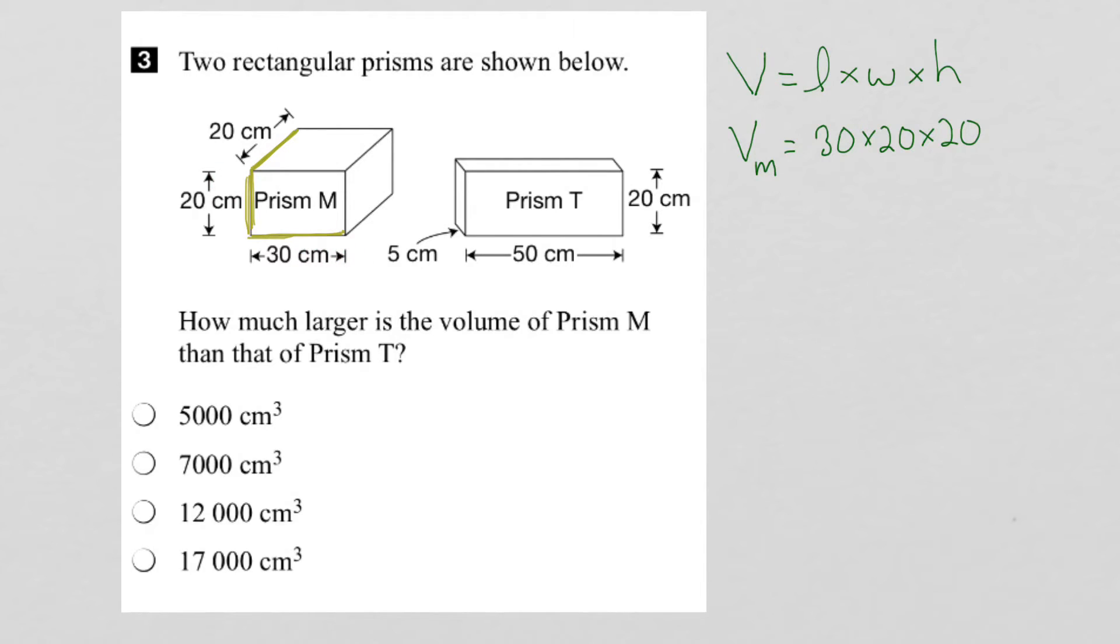So let's go ahead and do the multiplication. So if I wanted to multiply 30 by 20, I could just multiply the 3 by the 2 first and get 6, and then add the 2 zeros. Then I continue, and I multiply the 600 by the 20. I can multiply the 6 by the 2, which is 12, and then add to the end the 3 zeros. So the volume of prism M is going to be 12,000 cm³.